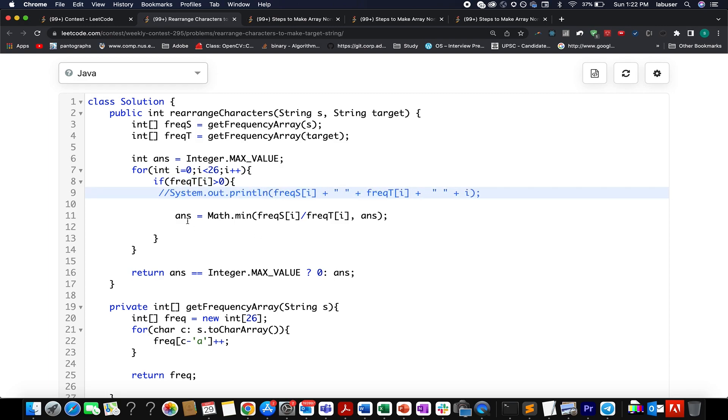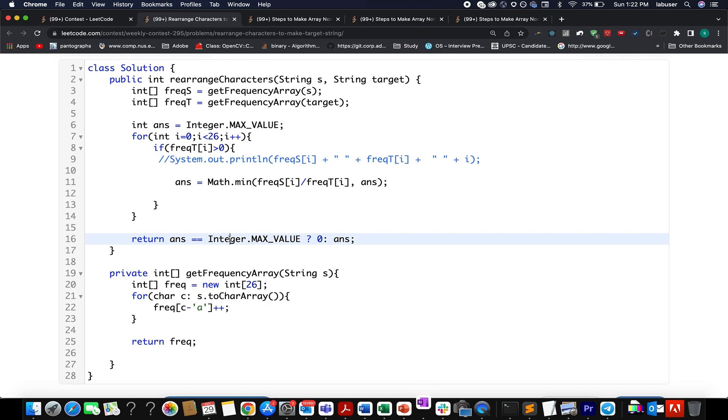What do I do? I update my answer to Math.min of frequency S at i-th index divided by frequency T at i-th index, and the answer. Once I'm done with this, I simply compare it with my max value. If it is equal, then I return 0; otherwise, I return the answer.